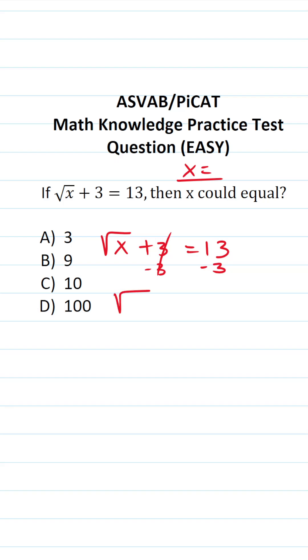This crosses out. This says the square root of x is equal to 13 minus 3, which is 10.